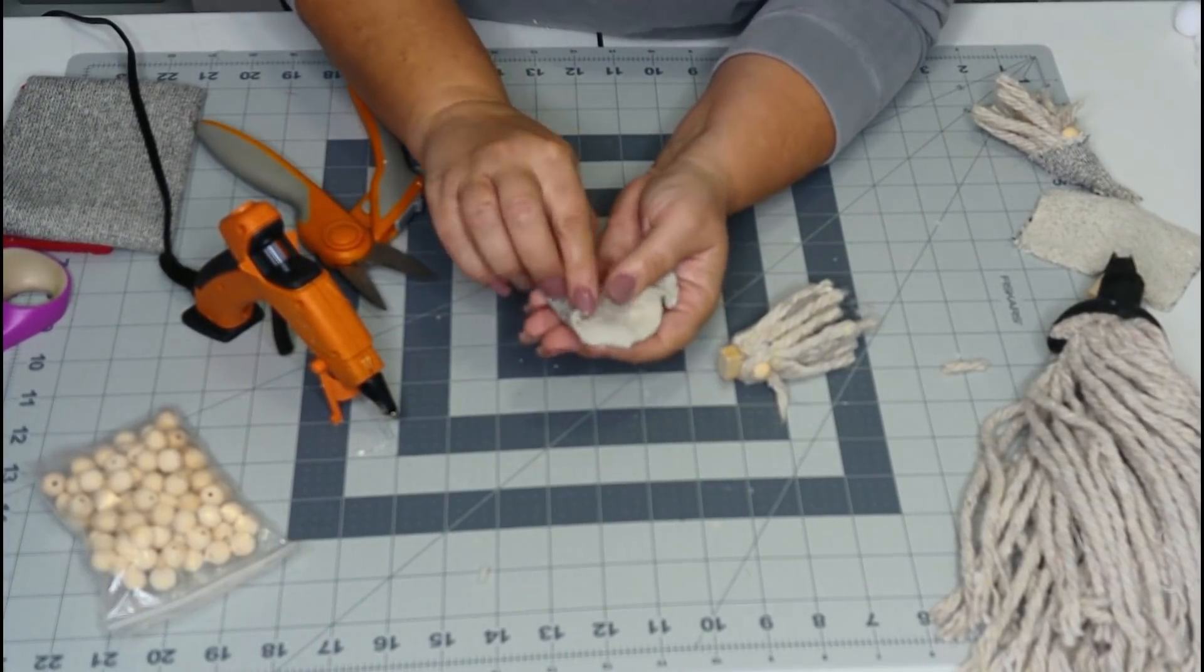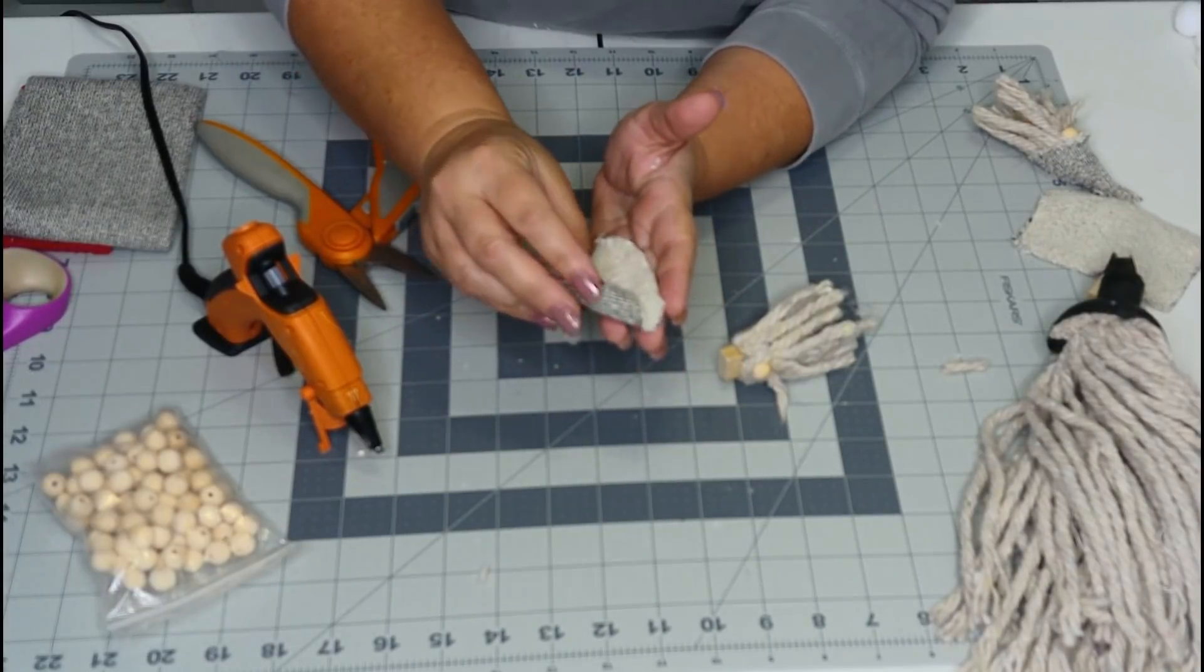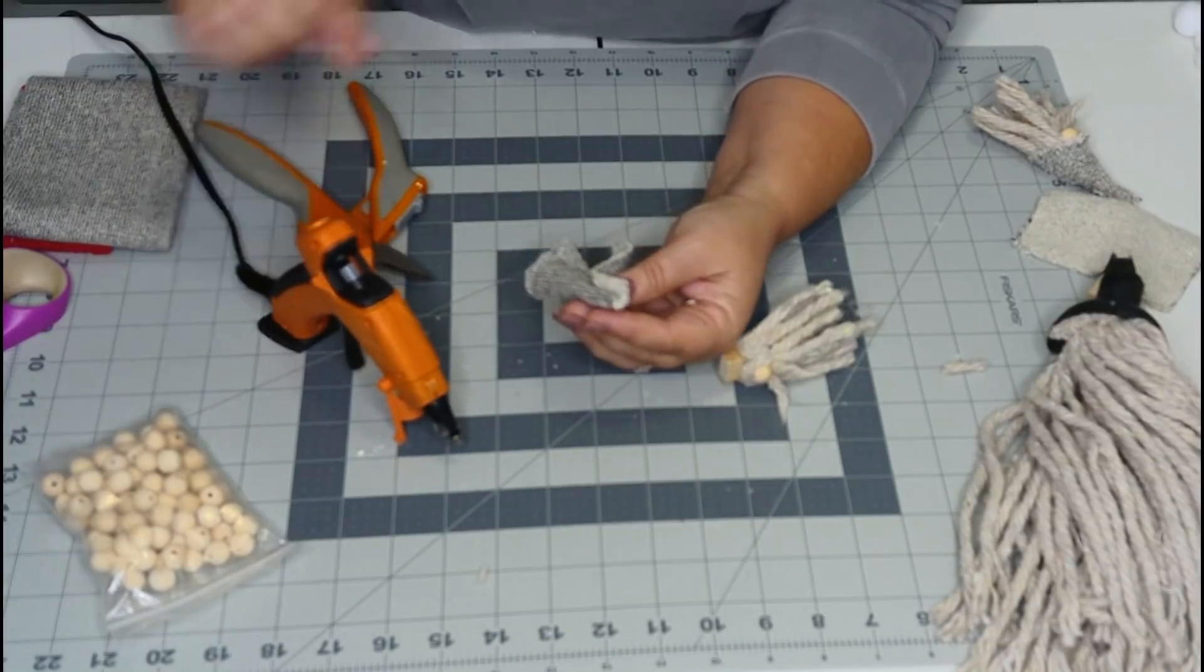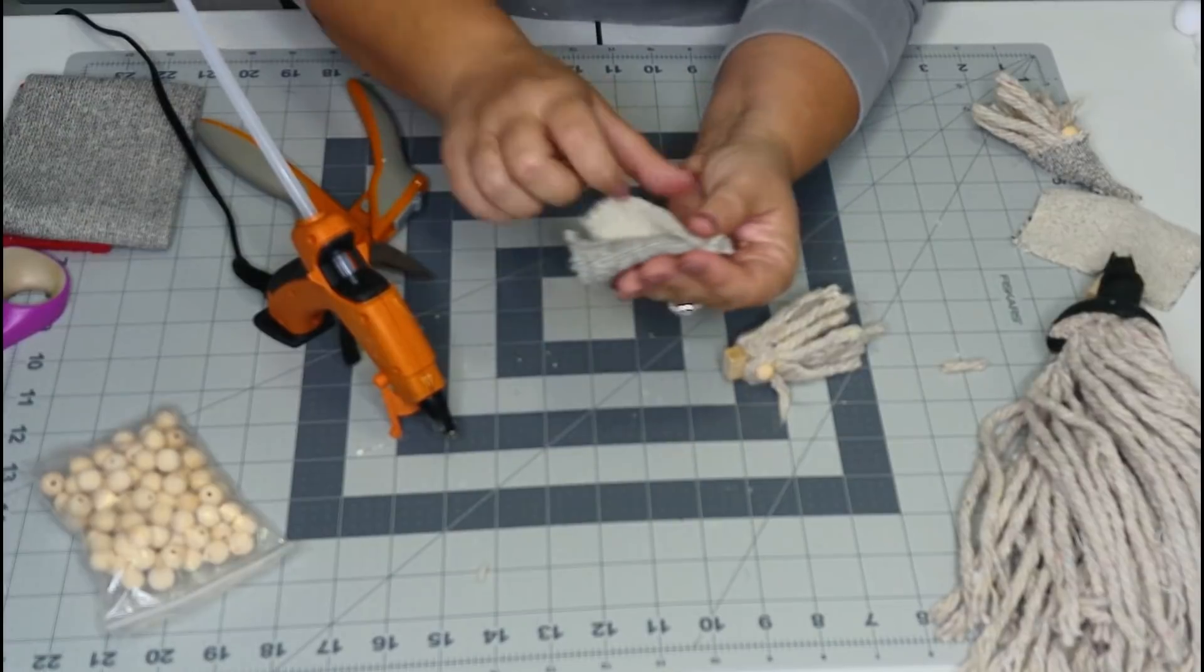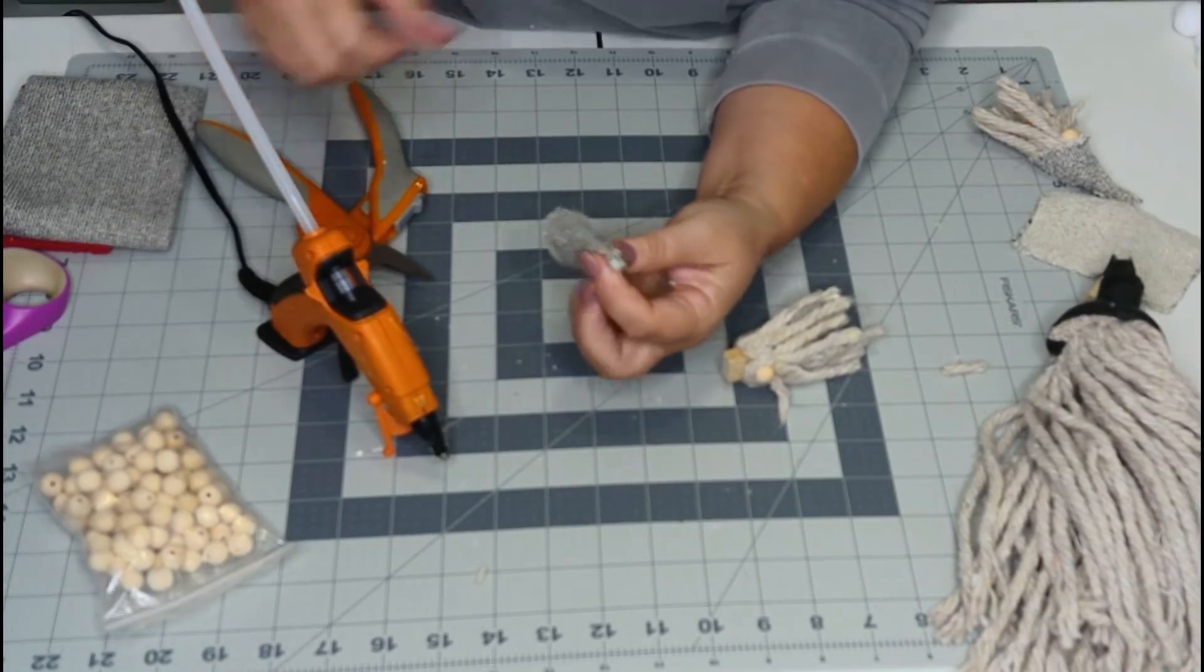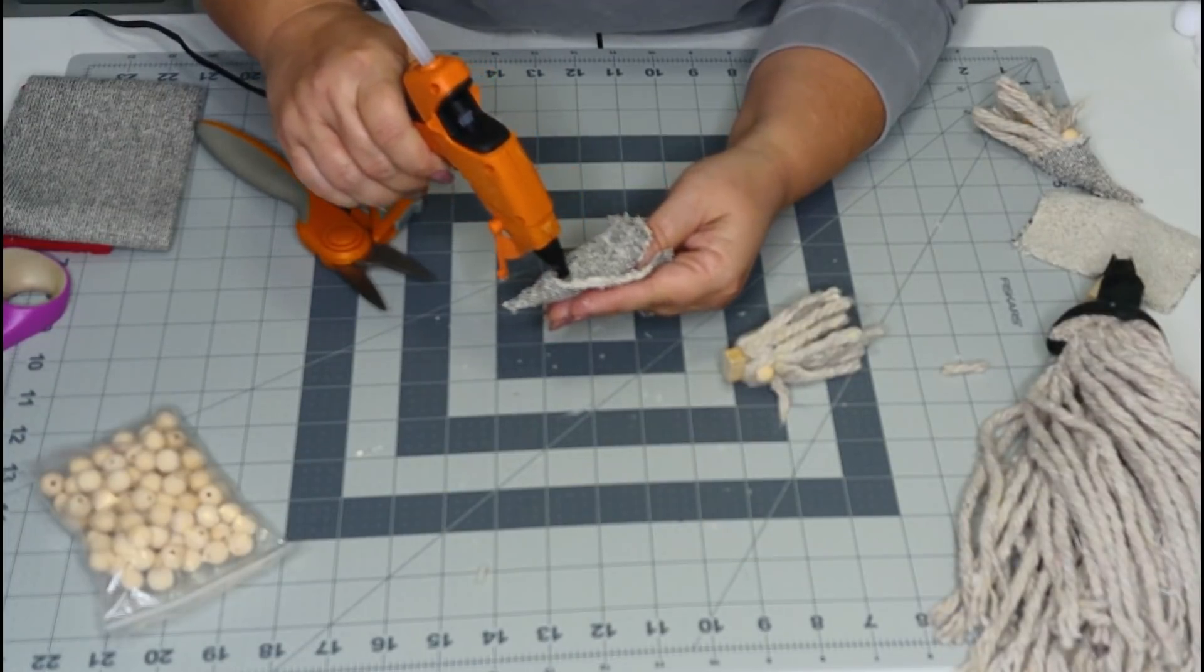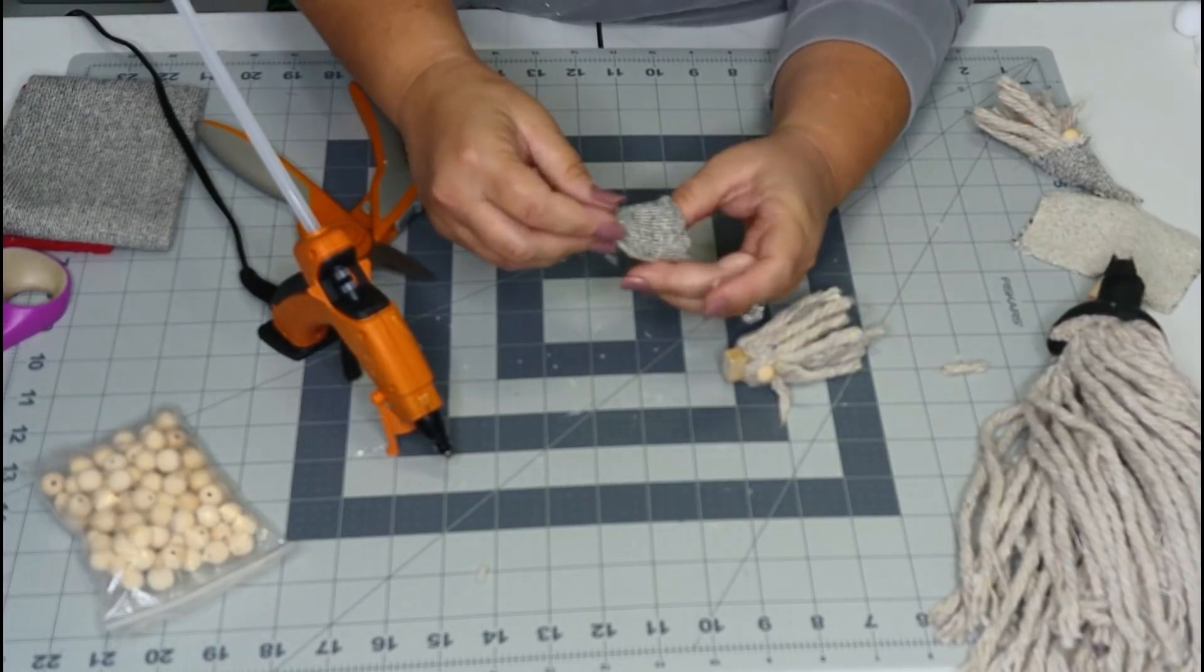Now we just want to put a little bitty drop of glue on the edge and we're going to roll our little gnome hat. We just want a little drop to hold it in place while we finish putting them together.